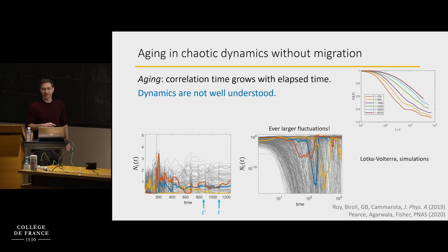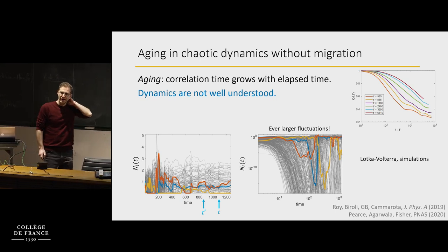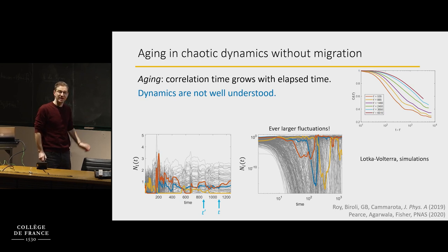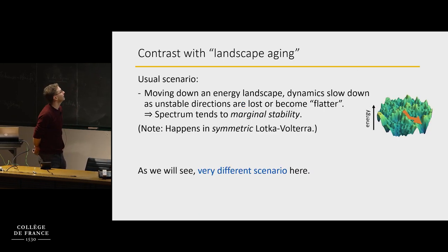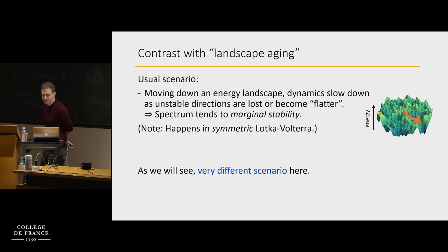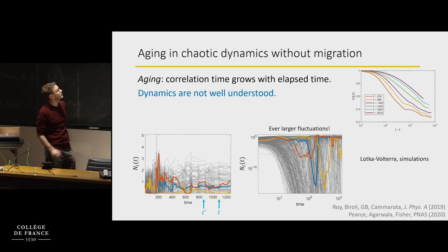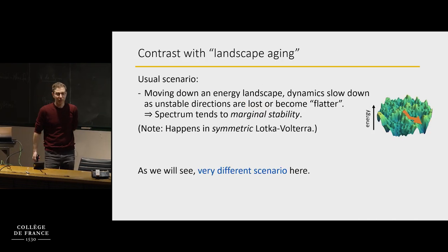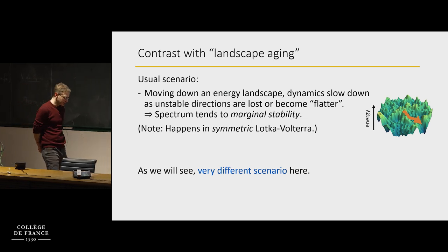This is what we would like to understand in Lotka-Volterra, but I actually want to show you another model — another set of dynamics which is exactly solvable — where we can really understand the details of what's going on. Before I do that, I want to contrast this dynamical slowdown, this aging, with one that is well known — which was mentioned in lectures earlier today.